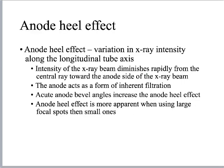This feeds right into the anode heel effect. This is a variation in intensity — what I was talking about before was a variation in spatial resolution, but it maps directly onto this variation in intensity. On the anode side of the x-ray tube there is lower x-ray intensity than on the cathode side.